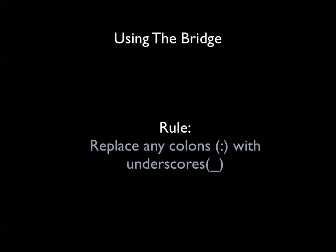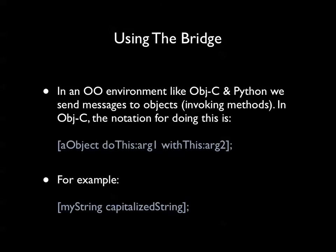Using the bridge is quite easy. A general rule is to replace the colons you see in Objective-C code with underscores to get the Python equivalent. In object-oriented environments, when you're calling a method you're really sending messages to an object. In Objective-C, if you had an object called aObject and wanted to call a method called doThis with two arguments, R1 and R2, that's how you'd do it. You don't need to know Objective-C, but if you're reading through Apple documentation and they give an example, it's probably going to be in Objective-C, so you want a general idea of how to interpret it.